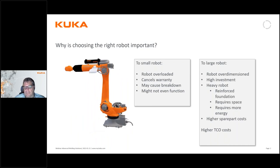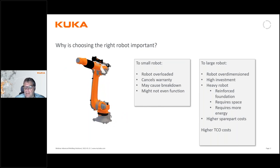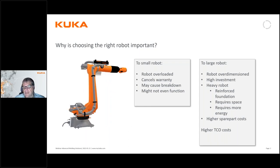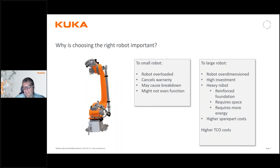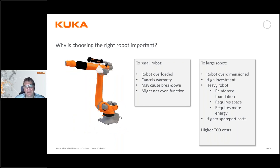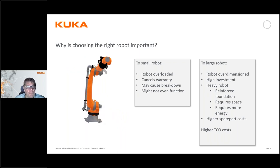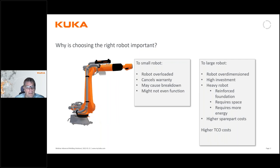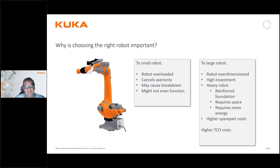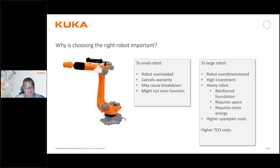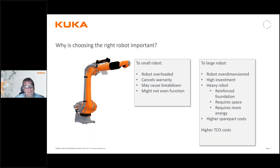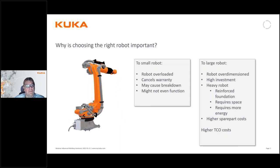It is actually also problematic to choose an over-dimensioned robot, for several reasons. Obviously, a larger robot has a higher cost. But it's not only that — a larger robot is also typically a heavier robot, and that brings some side effects. A heavier robot will require a more robust foundation in its mounting, which costs money. It requires space which might affect your application. Most of all, it also requires more energy when you move the robot and its load, and therefore generates a higher cost of ownership and operation over its total lifetime.